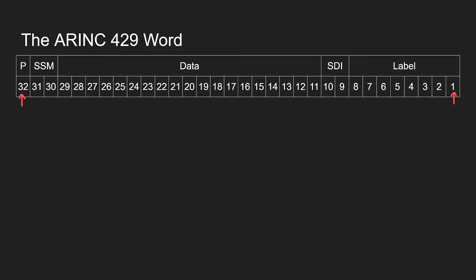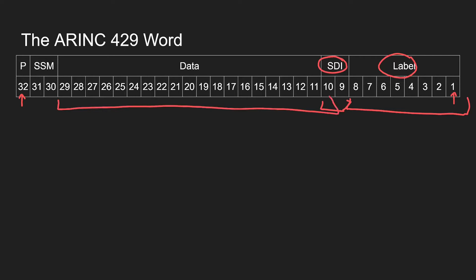The first eight bits we call our label. Then the next two bits we call SDI, and I'll be going over what that means later. Then we have 19 bits, and that's our data. Bits 30 and 31 are called the SSM — I'll be going over what that stands for later. And bit 32 is P, or the parity. We're going to go through these one at a time, and I'll explain what they do, what they mean, how to read them, how to use them, and hopefully give you a better understanding of ARINC-429.